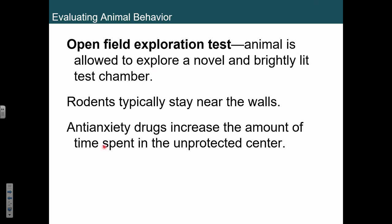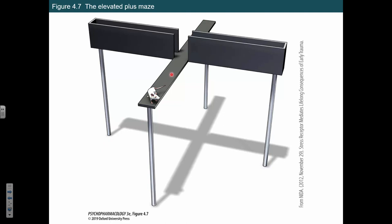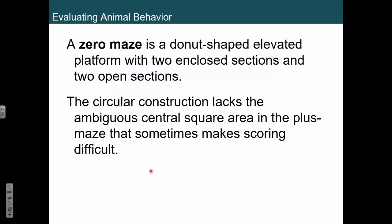The elevated plus maze: just when you thought a maze was awesome, let's put it off the ground a little bit because they can fall. Two of the arms are enclosed, so rats typically want to stay in there because that's safe. Two of the arms are open planks where they can walk out and fall off the edge. If you give a rat an anti-anxiety drug, they'll spend more time out on the ledge exploring than in the safety arms. Is that analogous to a person with anxiety? A person who's agoraphobic would want to stay inside all the time and not want to be out on the sidewalk. So it's a pretty nice analog.